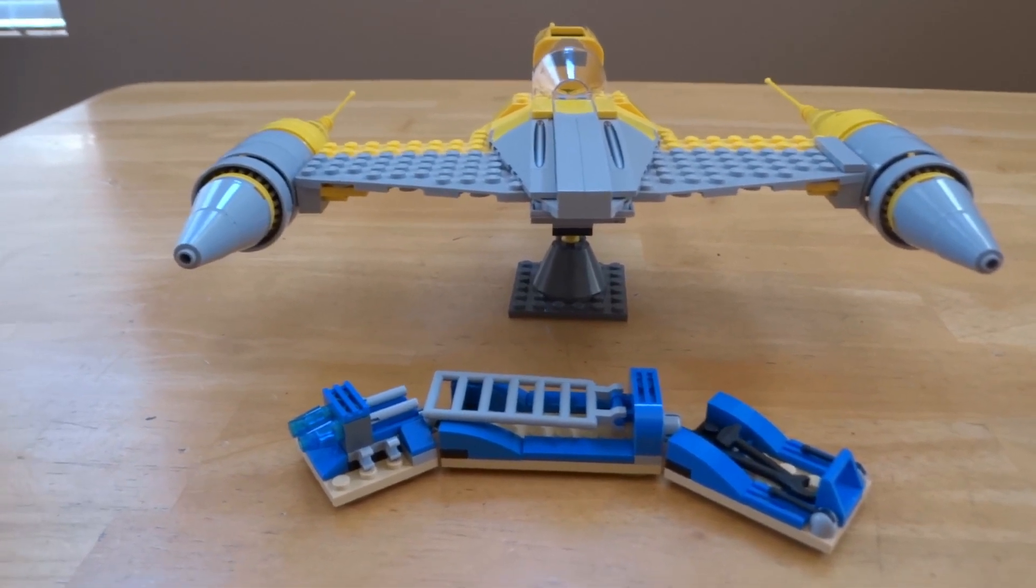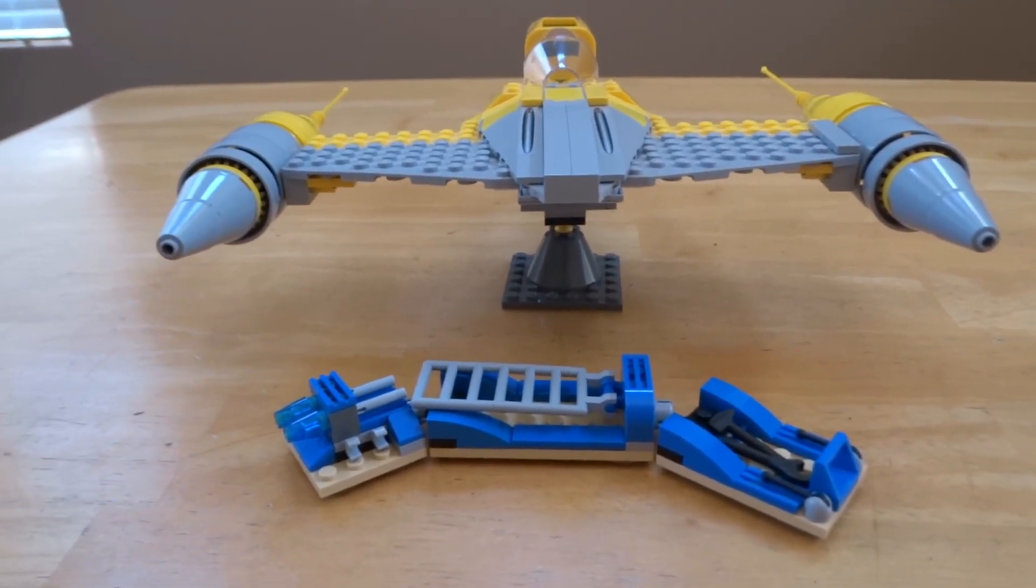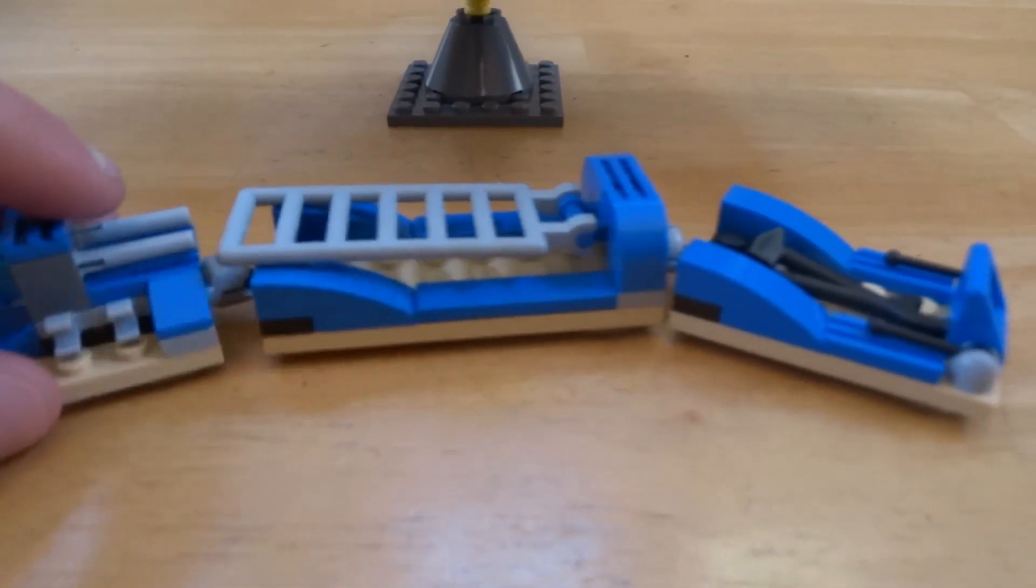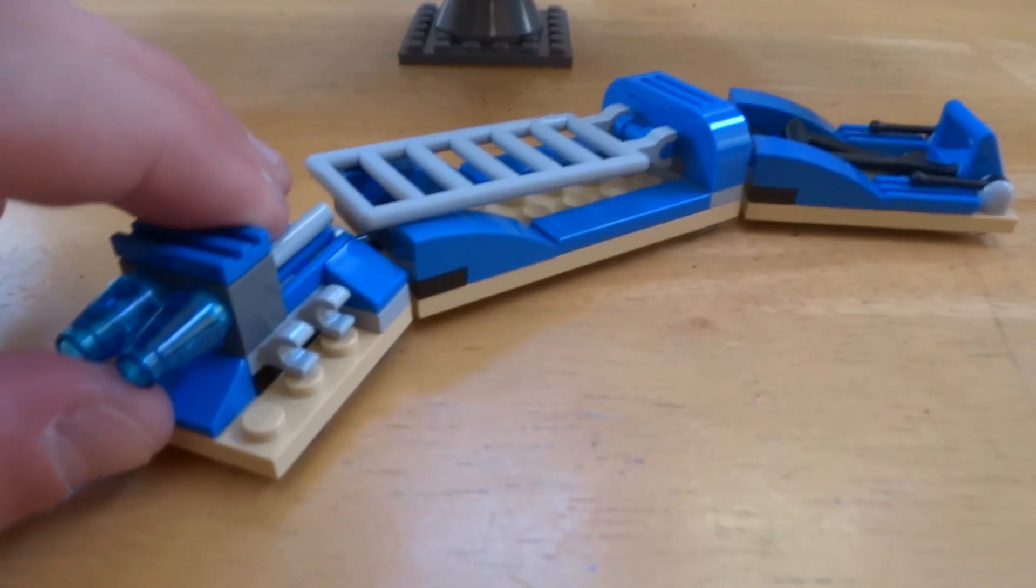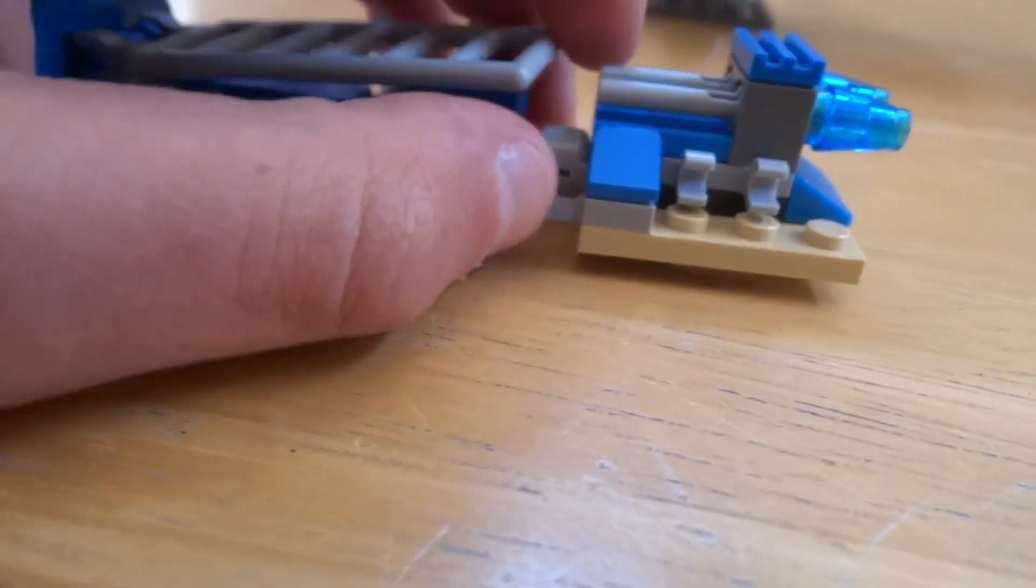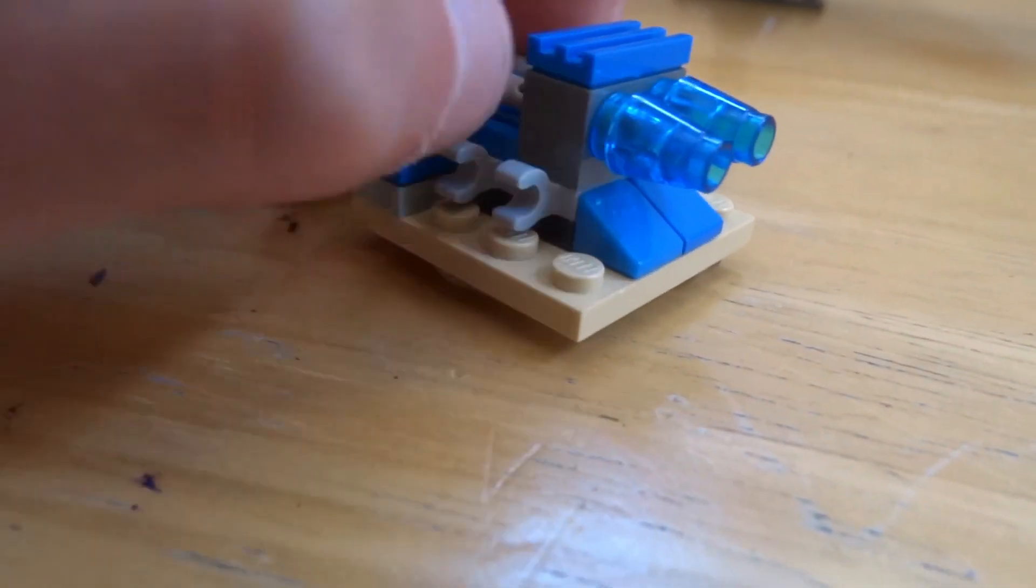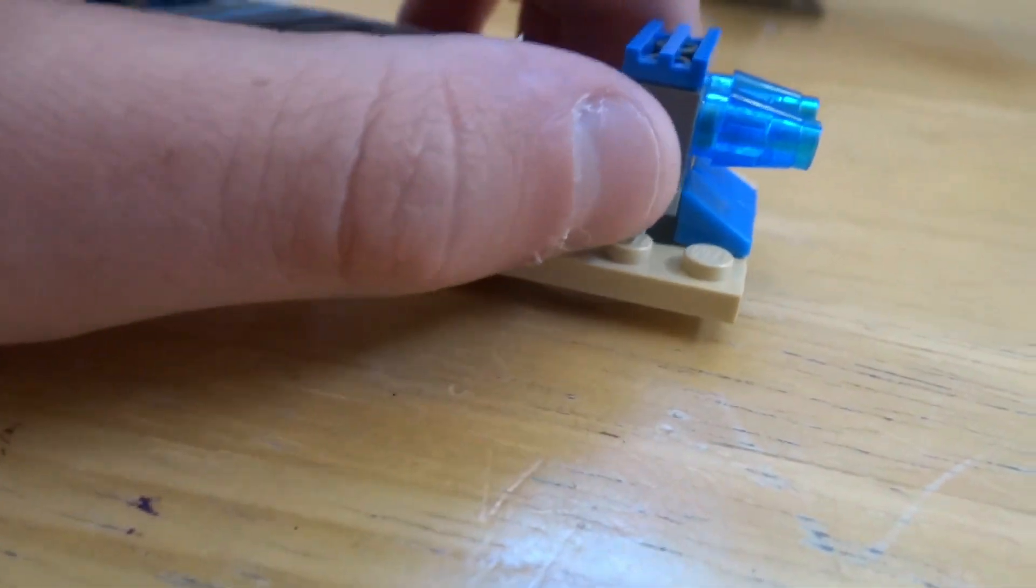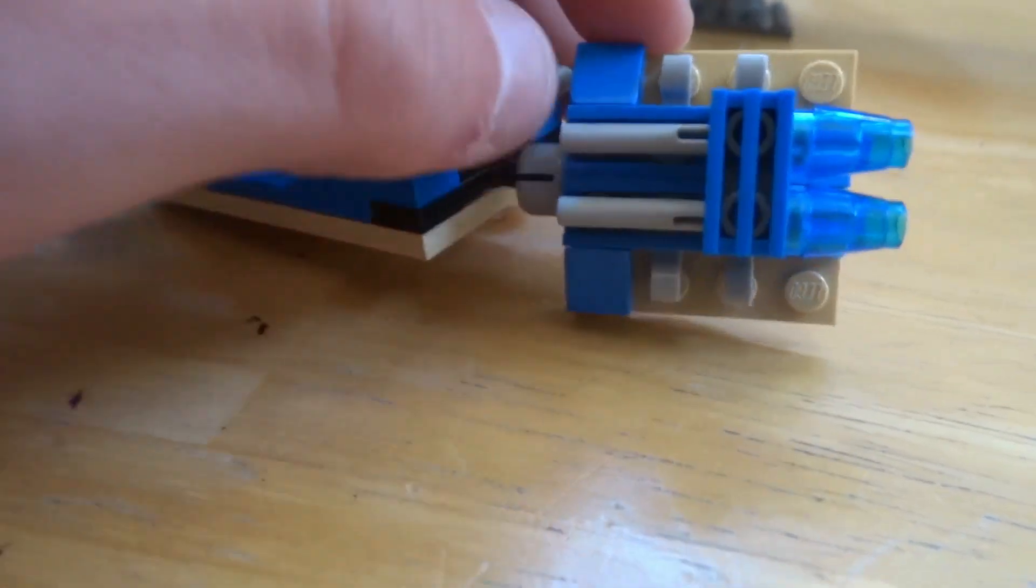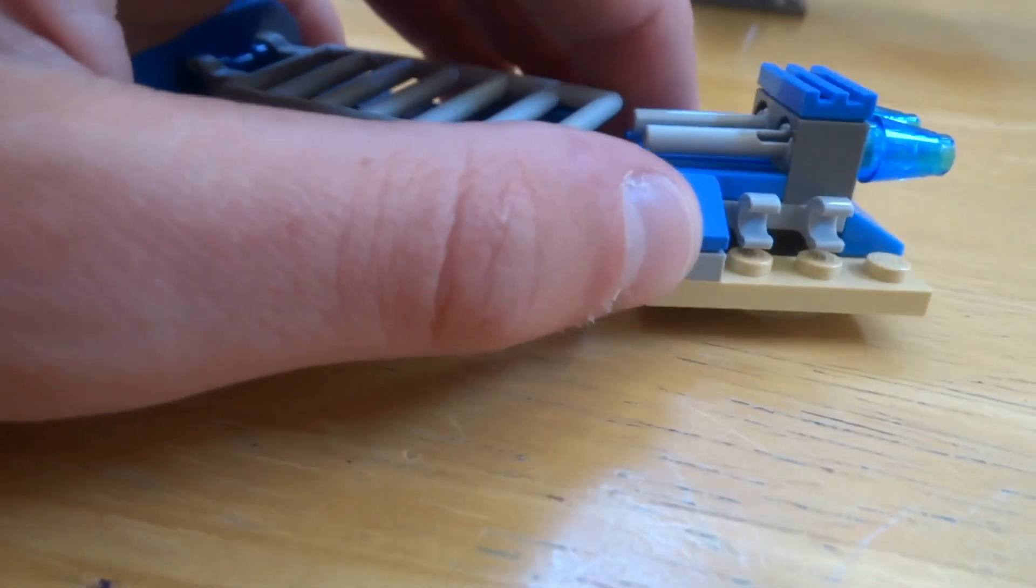As for the troop transport, you have three main segments that are all attached with this old looking connector. The back turret has two flick fire missiles. It's supposed to have four, but there were only two in the set that I could get, and it's pretty standard with some blue.